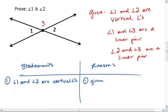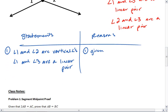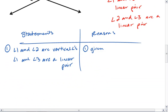We have that angle 1 and angle 3 are a linear pair. And we have that angle 2 and angle 3 are a linear pair.